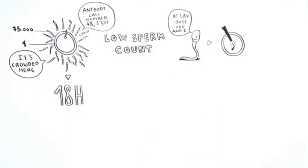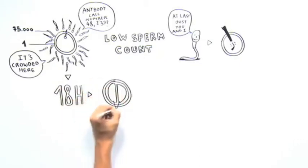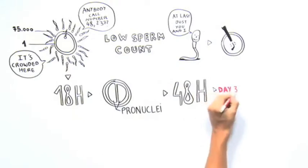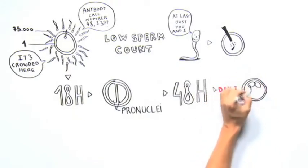18 hours later, 60% of the eggs will be fertilized, and the resulting embryos will show 2 pronuclei. By 48 hours, on day 3, the embryo consists of 6 to 8 cells.